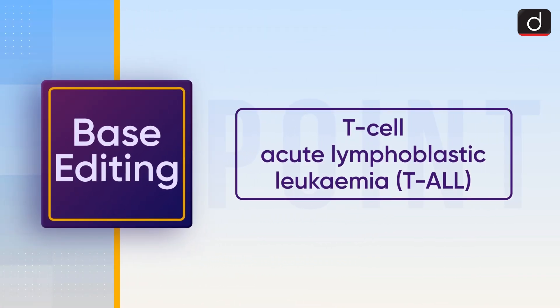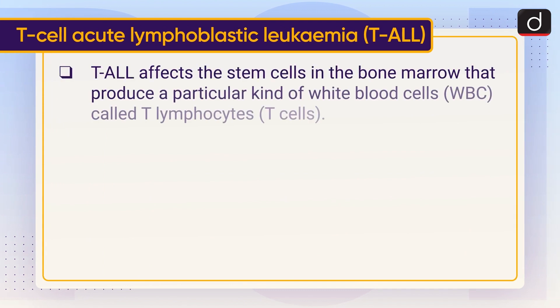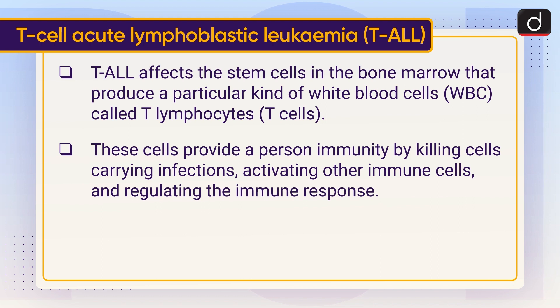Now let's discuss T-cell acute lymphoblastic leukemia, that is T-ALL. T-ALL affects the stem cells in the bone marrow that produce a particular kind of white blood cells called T-lymphocytes, or T-cells. These cells provide a person immunity by killing cells carrying infections, activating other immune cells, and regulating the immune response.